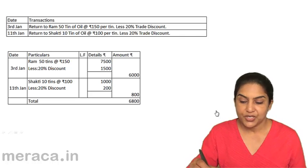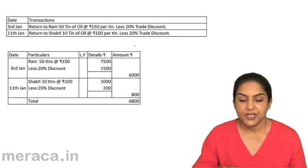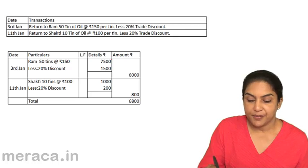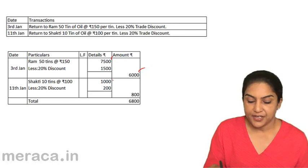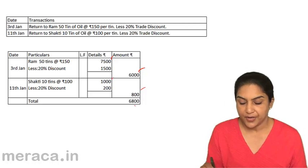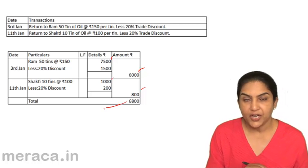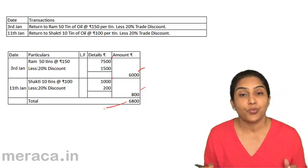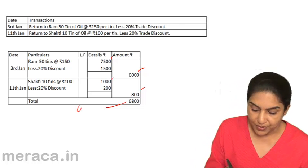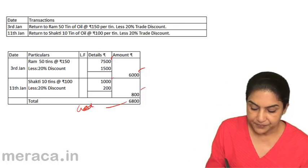For the transactions on 3rd January and 11th January, we write the details and the amount returned. For example, a return to Ram of 6,000, and a return to Shakti of 800. The total is 6,800. This periodic total is credited to the purchase return account, since purchase return is always credited.